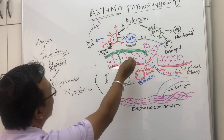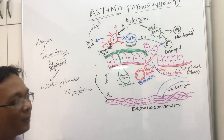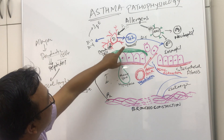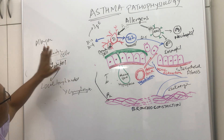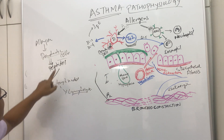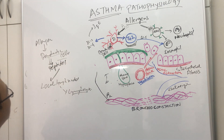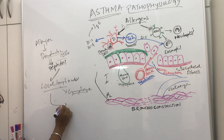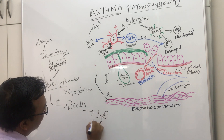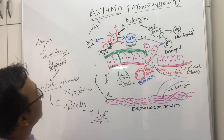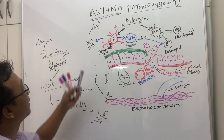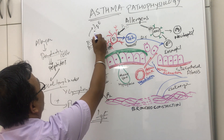Once T helper 2 cells are formed, a series of inflammation processes starts. The dendritic cells also influence B cells — they stimulate B cells, resulting in the production of IgE (immunoglobulin E). When immunoglobulin E is produced, it is due to mediators such as interleukin-3 and interleukin-4, and so lots of immunoglobulin E is produced.